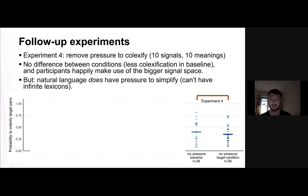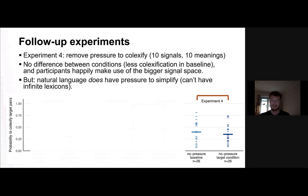Finally, a sanity check experiment with two conditions, but this time giving participants 10 meanings and 10 signals. Remember, in the first experiments there were only seven signals, forcing co-lexification by design. Whereas here, if they want, they can use one signal for each meaning. And indeed, the difference between conditions disappears. It's not that hard to learn 10 signals if you were already okay with seven. But this makes sense: natural languages have pressure to simplify — you cannot have infinite lexicons. What we're simulating with seven signals and 10 meanings is more natural because there is a real pressure to keep a lexicon manageable.